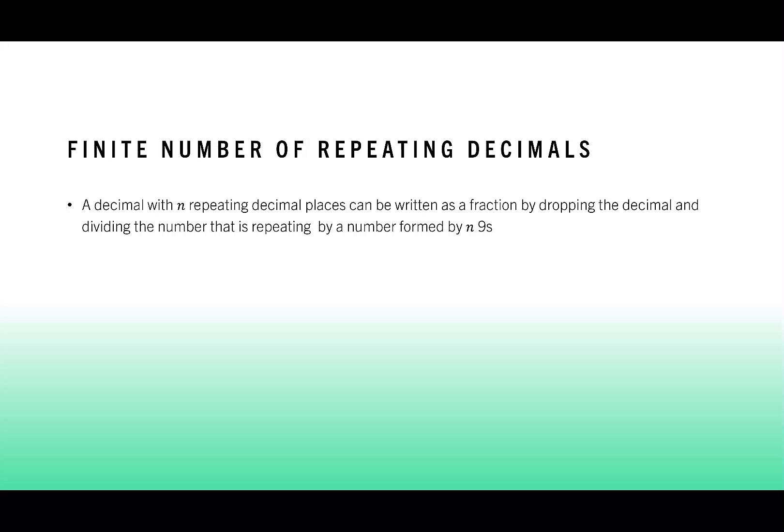Now let's take a look at a finite number of repeating decimals. So a decimal with n repeating decimal places can be written as a fraction by dropping the decimal. Then we divide the number that is repeating by a number formed by n nines. Again, let's talk about what that means.